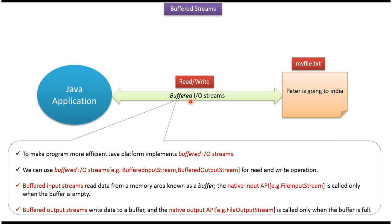We can use buffered input-output streams for read or write operations, and buffered input-output streams are more efficient. Buffered input streams read data from memory known as a buffer. The native input API, for example file input stream, is called only when the buffer is empty. Buffered output streams write data to a buffer, and the native output API, for example file output stream, is called only when the buffer is full.